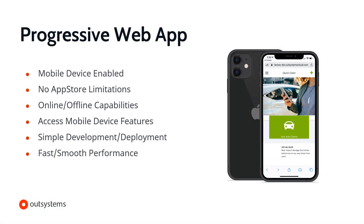The scenario will be that we are an auto insurance company that would like to provide our customers with an easy-to-use mobile application so that they can get their claims started immediately on the scene of an accident. Since we need this application to work on a mobile device but we really don't know what type of device our customers will have, PWA seems to be a pretty good option. Some of the advantages will be that there are no app store limitations. It will have online and offline capabilities, and it can access mobile device features such as geolocation and the camera.